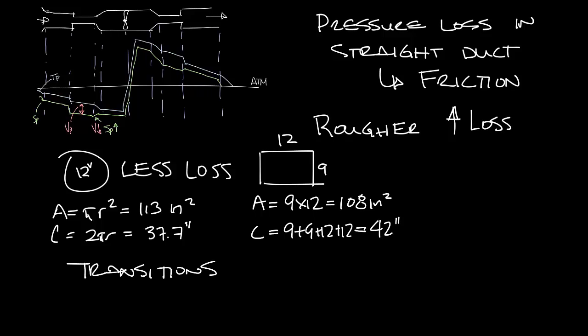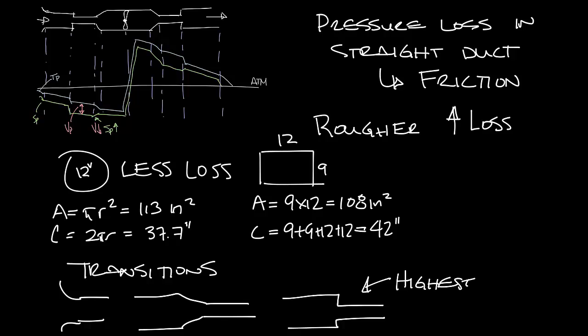Inlet and outlet transitions will affect pressure loss as well. The more gradual the transition, the lower pressure loss. So a bell mouth is probably the best and then a slight angle down to the smaller ductwork and then the worst is going to be just a hard transition from one to the other and that will have the highest loss.